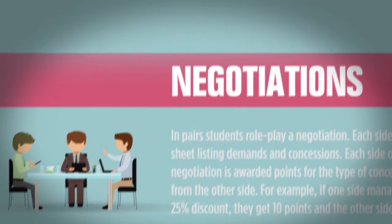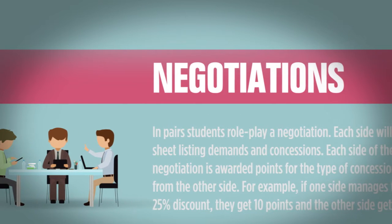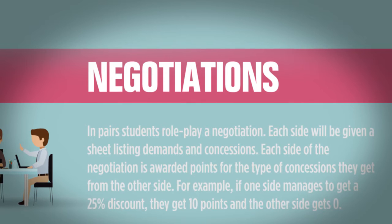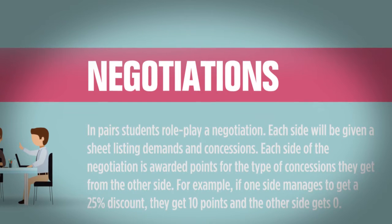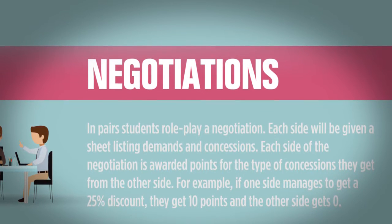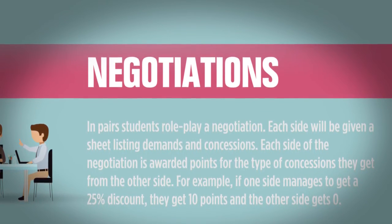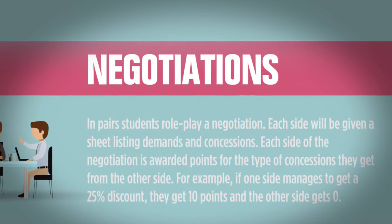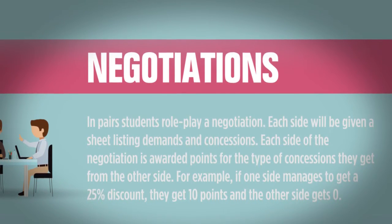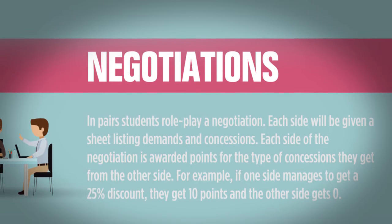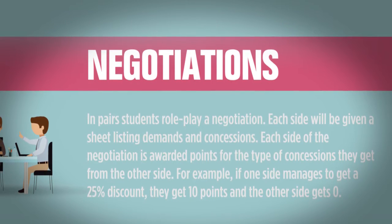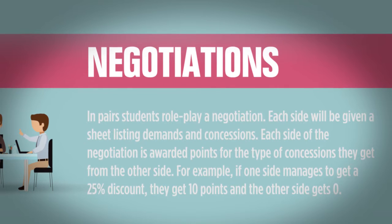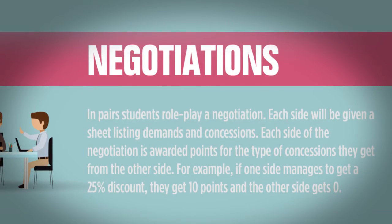Negotiations. In pairs, students role play a negotiation. Each side will be given a sheet listing demands and concessions. Each side of the negotiation is awarded points for the type of concessions they get from the other side. For example, if one side manages to get a 25% discount, they get 10 points and the other side gets 0.